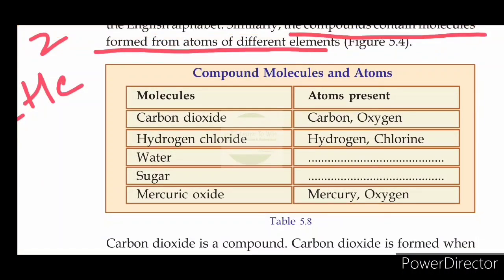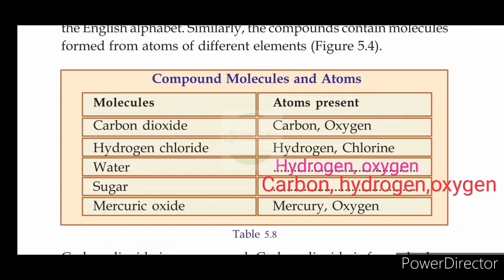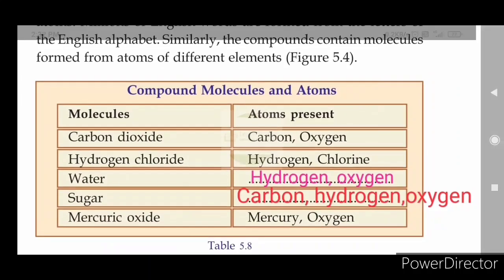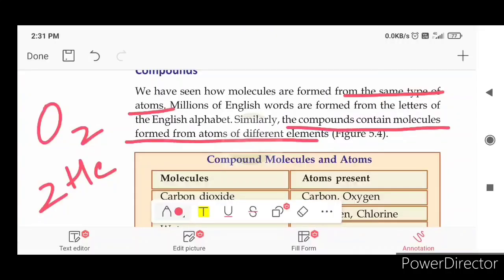Carbon dioxide. Hydrogen chloride. Hydrogen is also in the first place. Water. Hydrogen and oxygen — that is water. The sugar. We are going to talk about the example of sugar. Carbon dioxide, hydrogen oxygen, mercury and oxygen. The water is hydrogen and sugar.